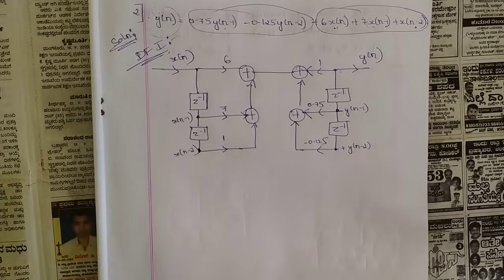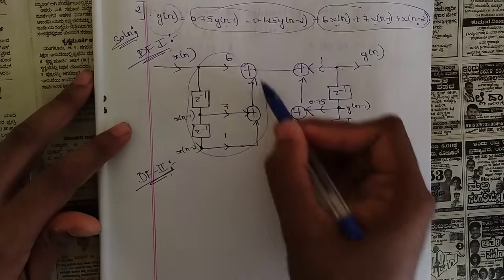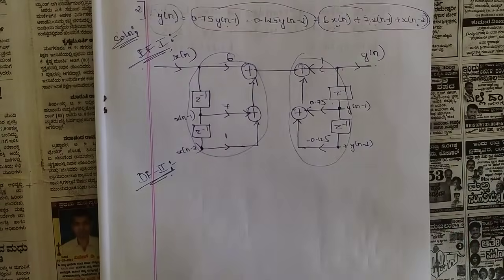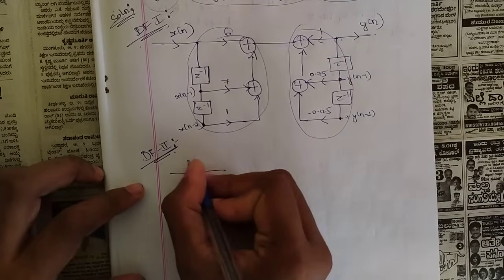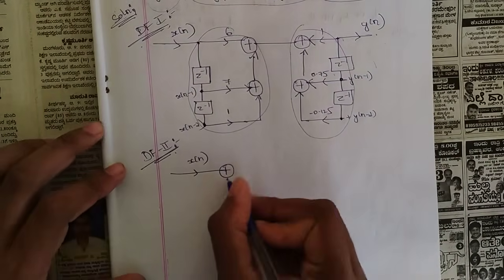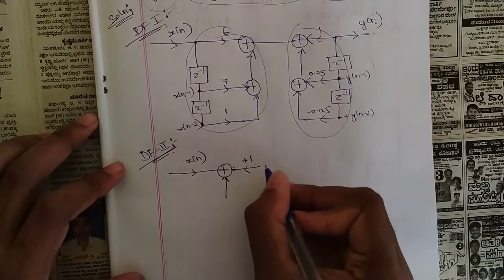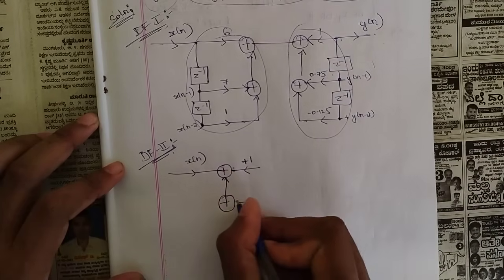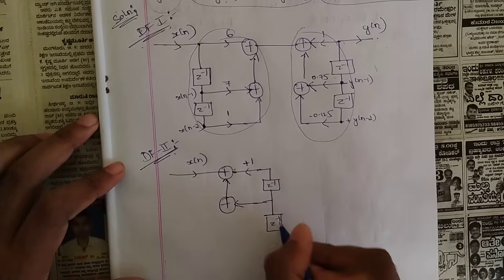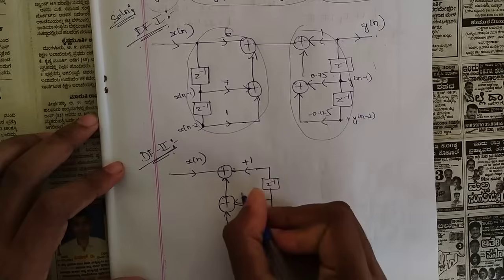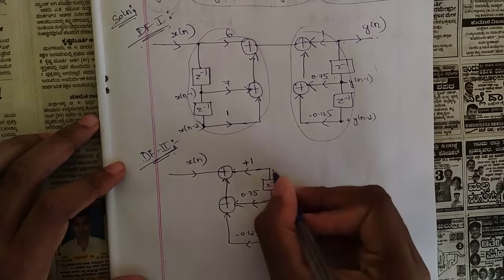Now using this DF1 structure we will draw the DF2 structure. In DF2, the positions of x(n) and y(n) do not change; only the input and output sub-structures are interchanged. Bring the output-side structure to the input side and vice versa. So one summer comes at the beginning. We have one delay, and the coefficients 0.75 and minus 0.125 are placed on the output structure side.